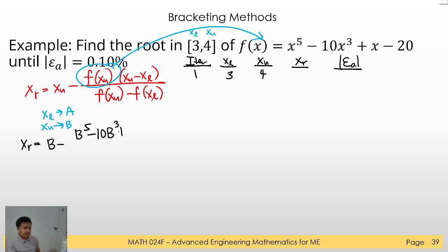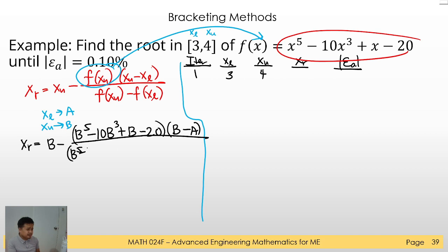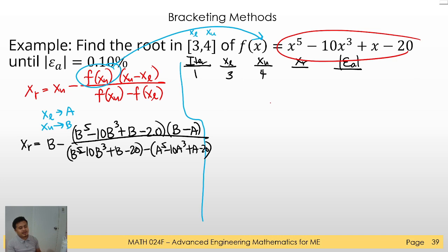We just change F of X by substituting XU (which is B), then multiplying by XU minus XL (which is B minus A), divided by F of XU minus F of XL. So your formula becomes: B minus (B^5 minus 10B^3 plus B minus 20) times (B minus A) over (B^5 minus 10B^3 plus B minus 20) minus (A^5 minus 10A^3 plus A minus 20). This is the formula you will utilize in your calculator.